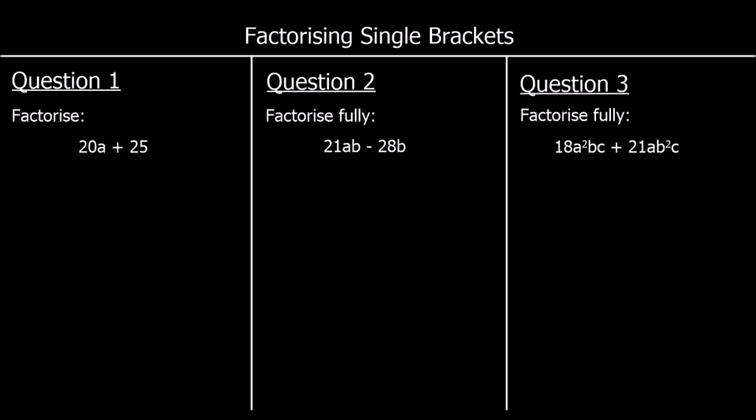Okay, let's finish up with 3 questions — pause the video and give them a go. Question 1: factorize 20a plus 25. 20 and 25 are both in the 5 times table, so 5 comes outside. 5 times 4a makes 20a and 5 times 5 makes 25.